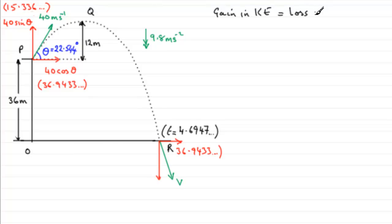What is the gain in kinetic energy? It's going to be the kinetic energy at R, which is ½mv², minus the initial kinetic energy, which will be ½m times 40². That's equal to the loss in gravitational potential energy. It had potential energy up here, gravitational potential energy of mgh, which would be m times g times h, which was 36 meters.